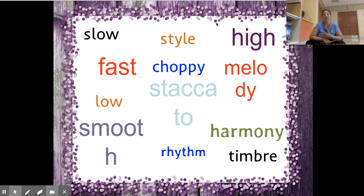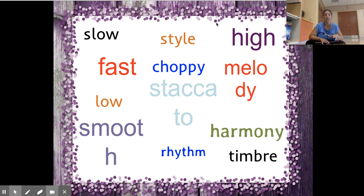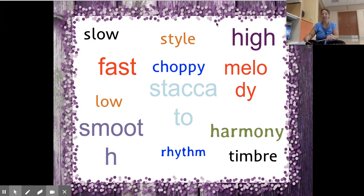Let's review what we've learned about theme and variations. The theme is the main melody — the main song, just like 'Mary Had a Little Lamb.' A variation is how you take that theme and change it — it still sounds like the original song but in a different way, like going fast, changing the pitch, or doing a combination like making it high and fast. Our next lesson will be about theme and variations on another song, and you'll have to figure out what the variations were. See you next time!